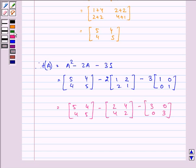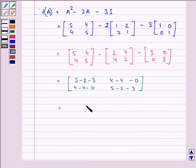Solving we have 5 minus 2 minus 3, 4 minus 4 minus 0, 4 minus 4 minus 0, 5 minus 2 minus 3. So that is equal to 0.